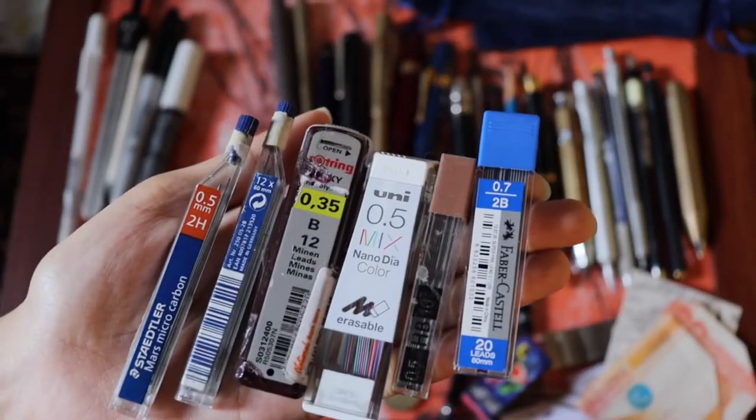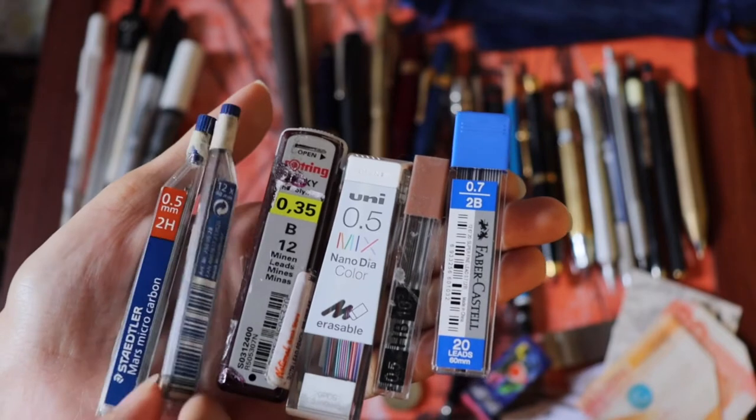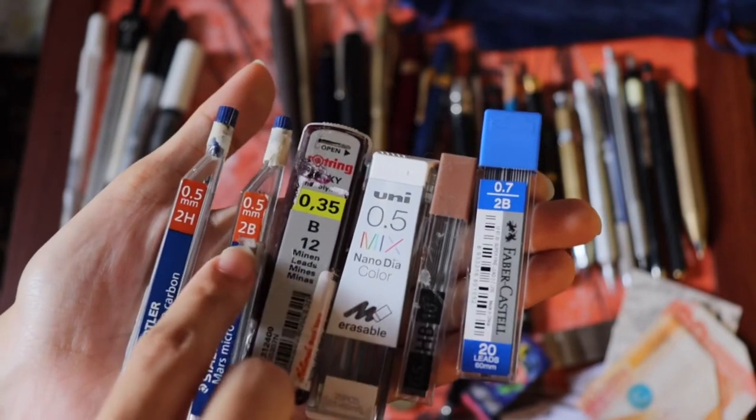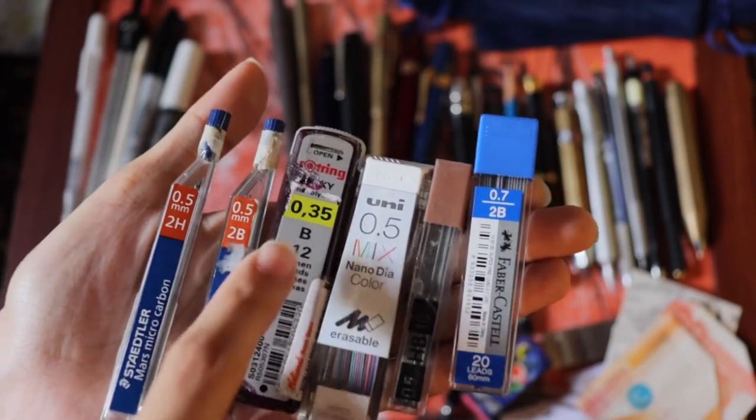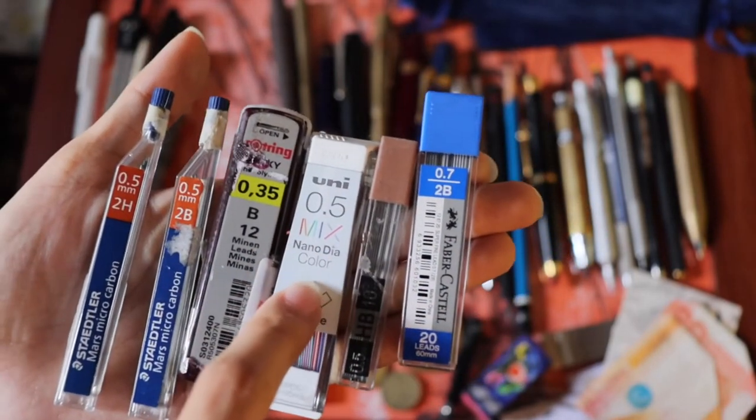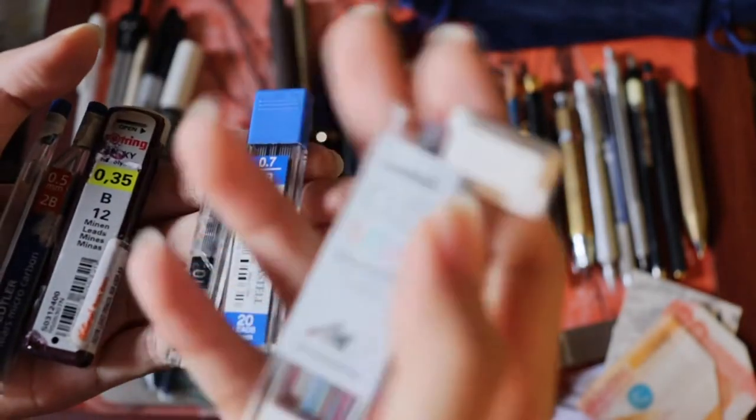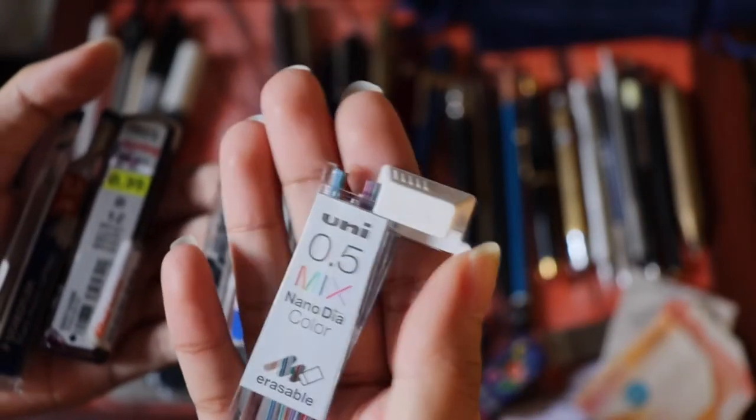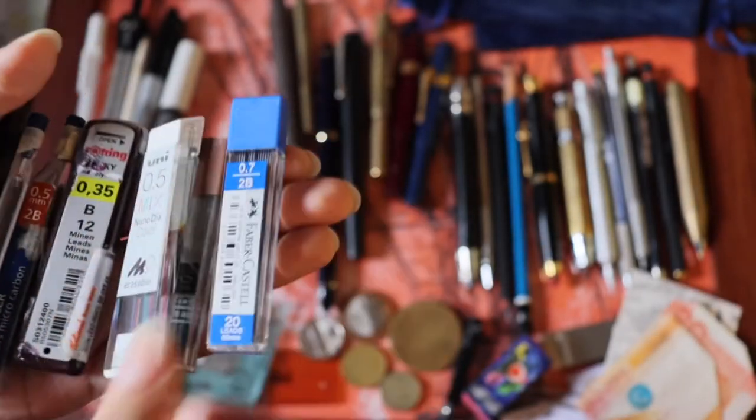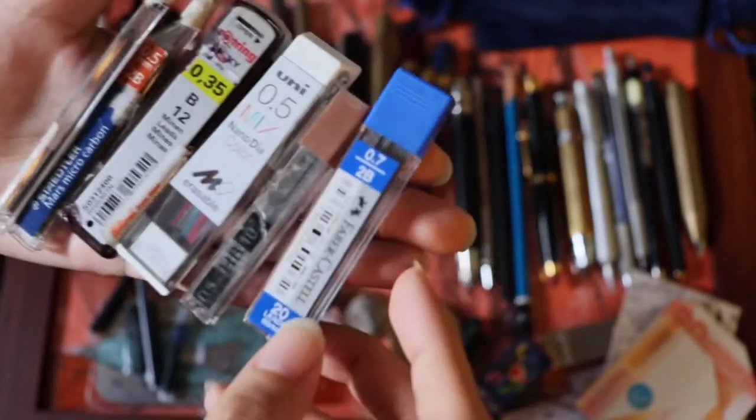There's 2H right there. And then I believe that's a 2B, yes that's a 2B. And a B. And there's even a mixed color. That's quite interesting. It's like colored pencils but for mechanical pencils. Look, there's some blue, an orange, a violet. It's really interesting. And then there's also an HB, the neutral one. And then 2B for my 0.7 pencil.